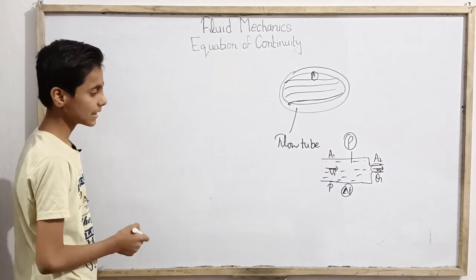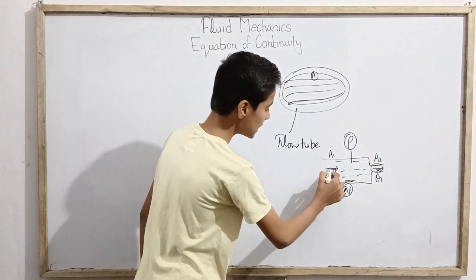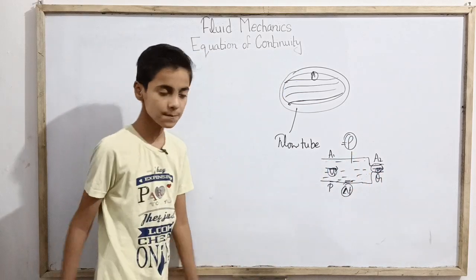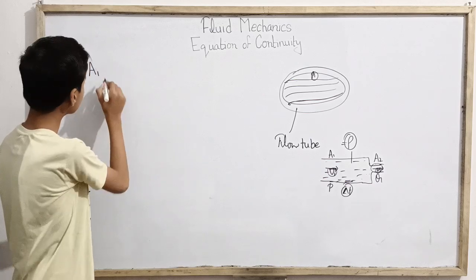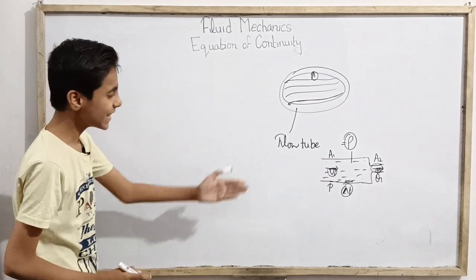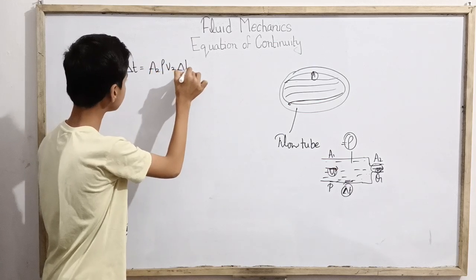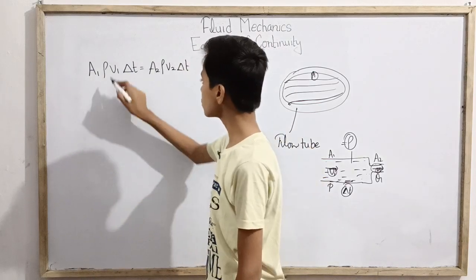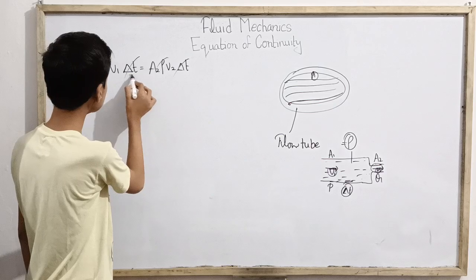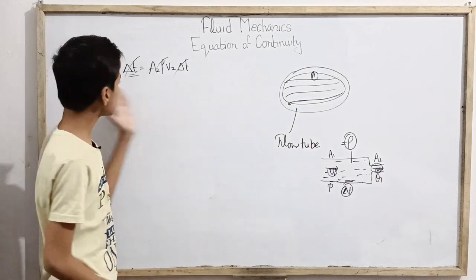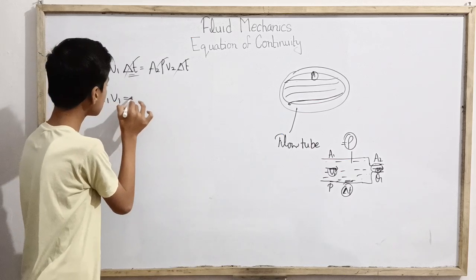In delta-t time, the mass that passes can be written in equation form. The mass passing through the second region is A2 times rho times V2 times delta-t. Setting the mass at region 1 equal to the mass at region 2, rho cancels and delta-t cancels, and we get the relation that A1 V1 equals A2 V2.